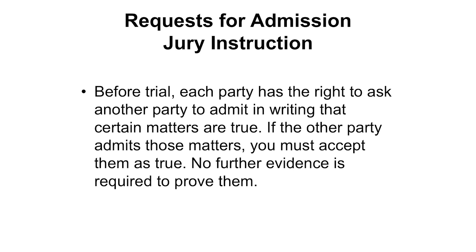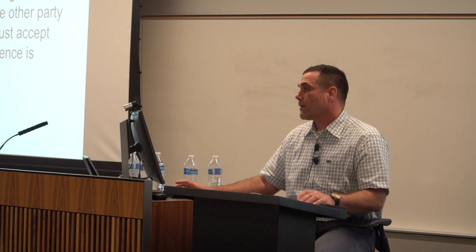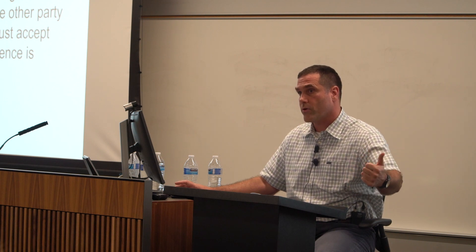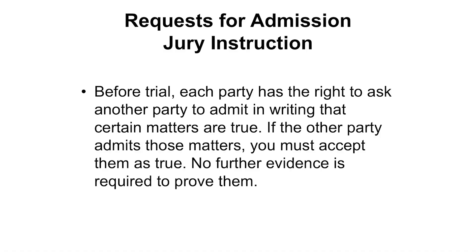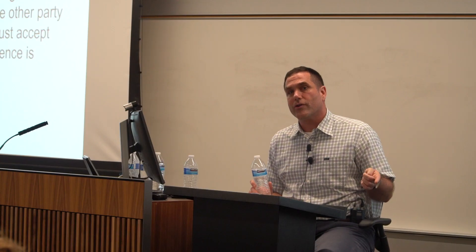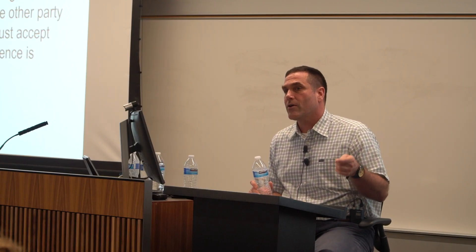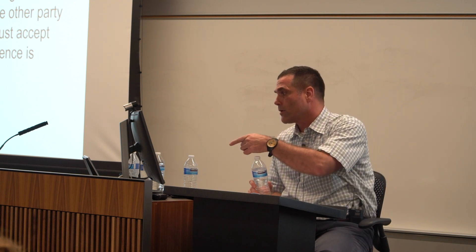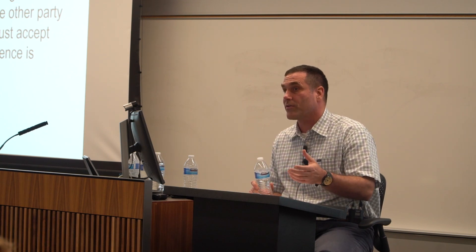The request for admission jury instruction in California gets read to the jury before you read the responses to them. It says: 'Before trial, each party has the right to ask another party to admit in writing that certain matters are true. If the other party admits those matters, you must accept them as true. No further evidence is required to prove them.' That's why juries always send out a question asking what the admissions were — because they're true, they have to accept them, and they want to know exactly what they are.